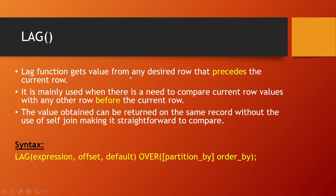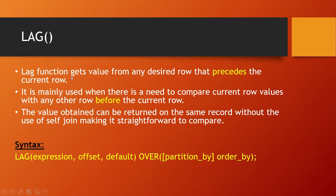Lag. The lag function gets a value from any desired row that precedes the current row. For example, if we have values 1, 2, 3 in the first, second, and third rows, with lag of 1 we will have 1 in row two, 2 in row three, and 3 in row four. It is mainly used when there is a need to compare current row values with a previous row, such as comparing the current state with a previous state.